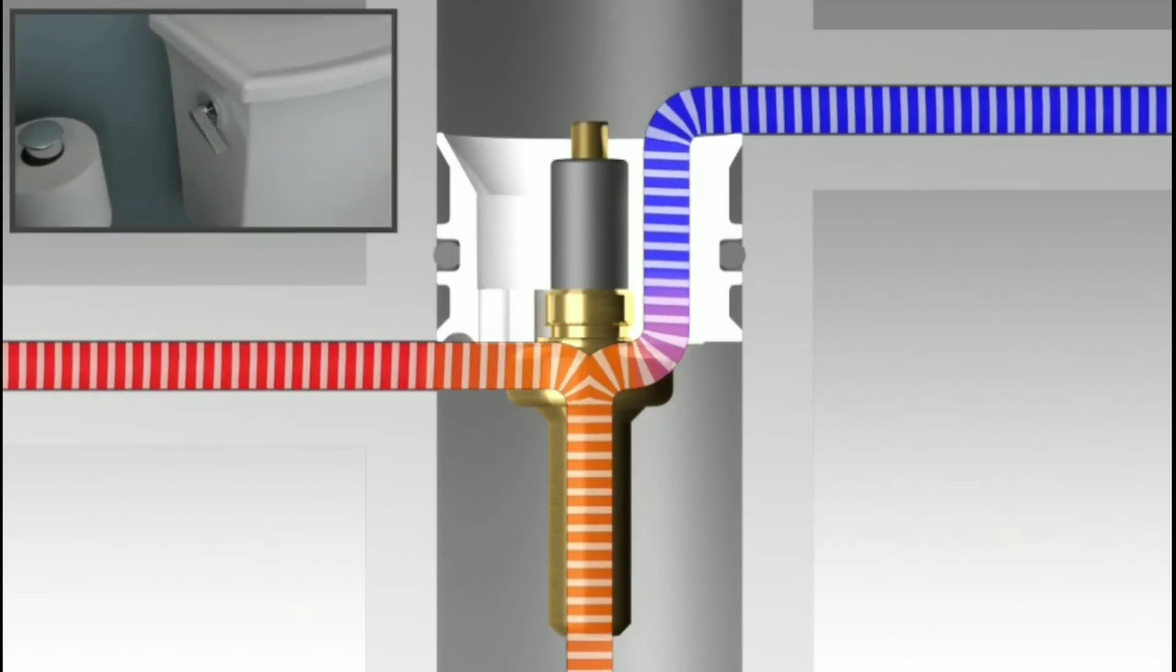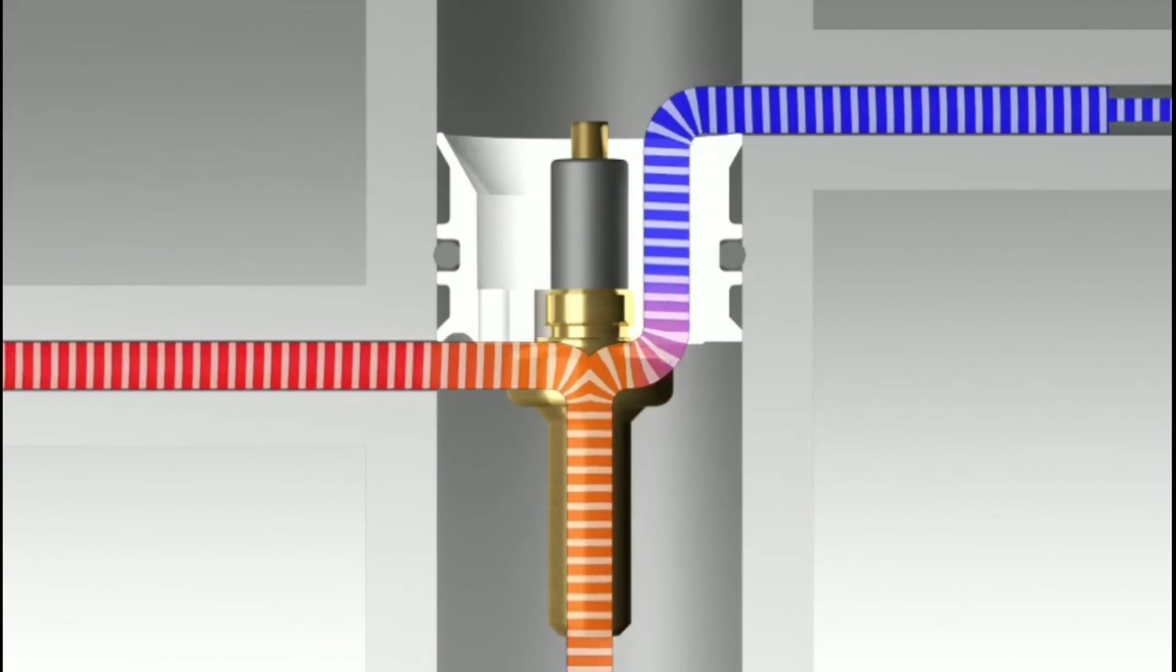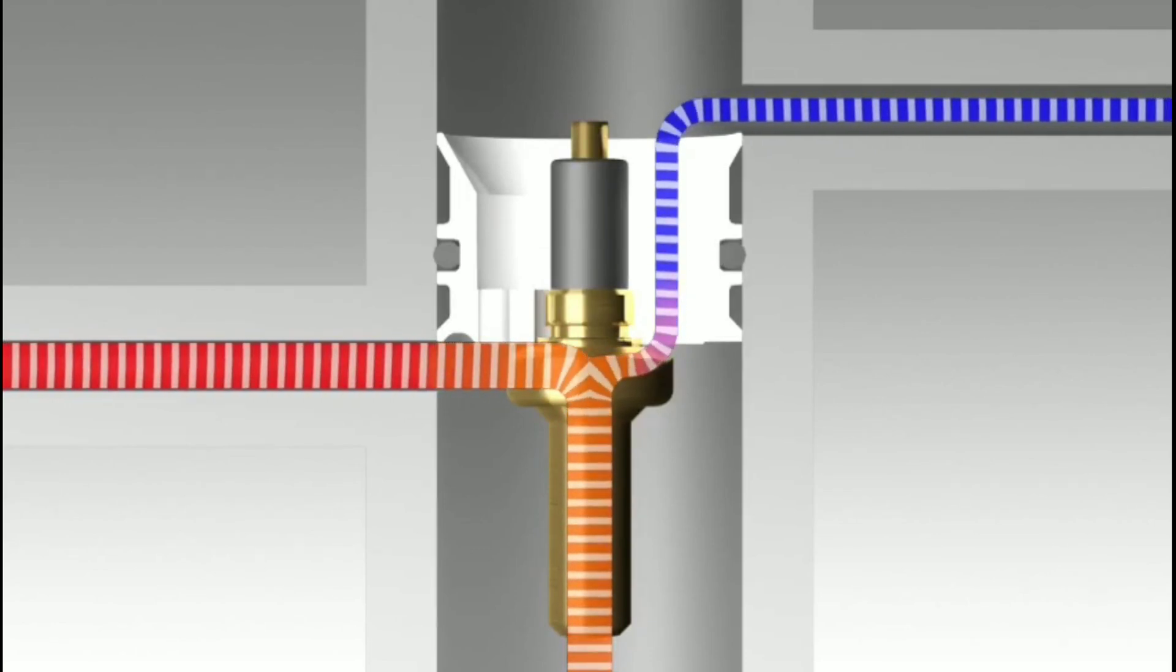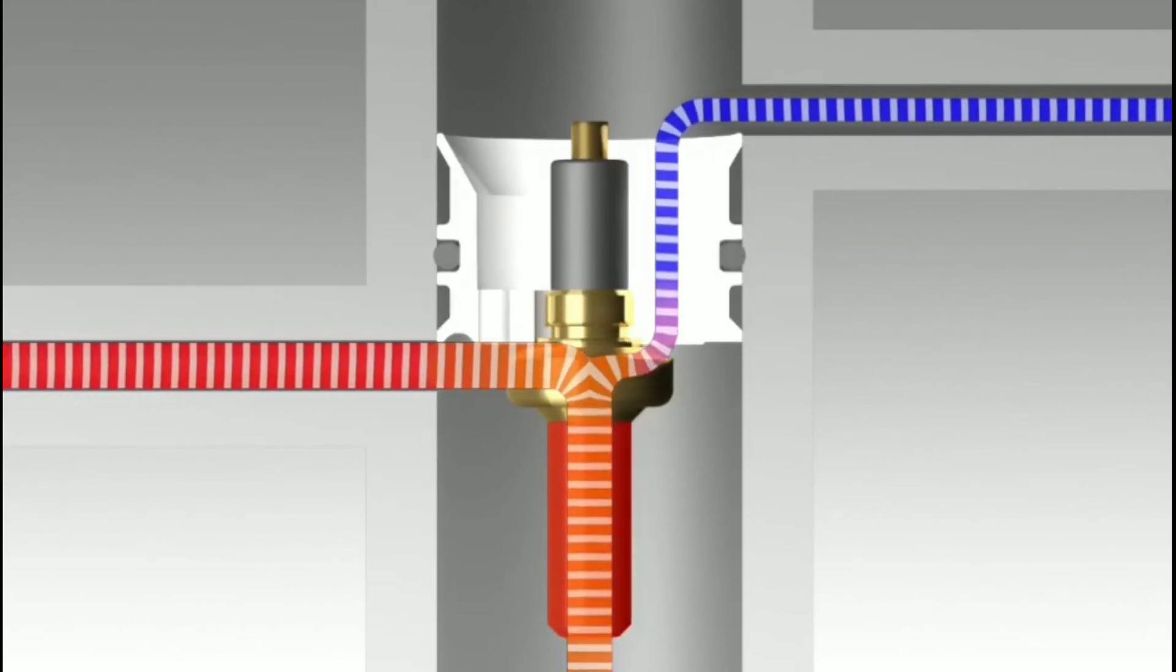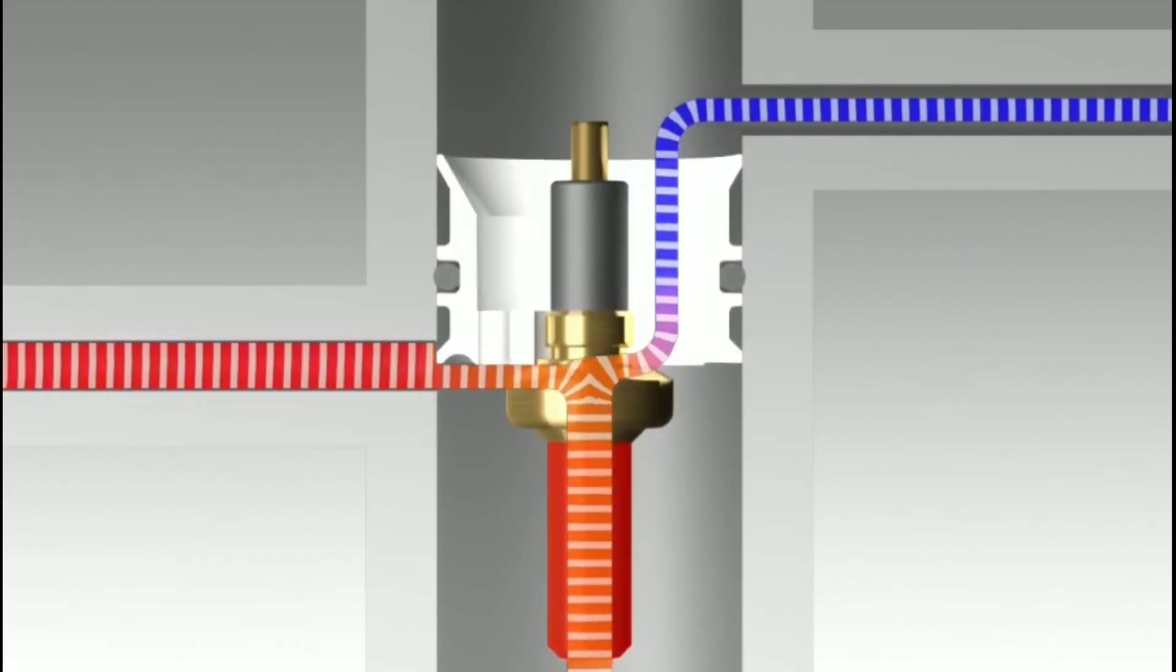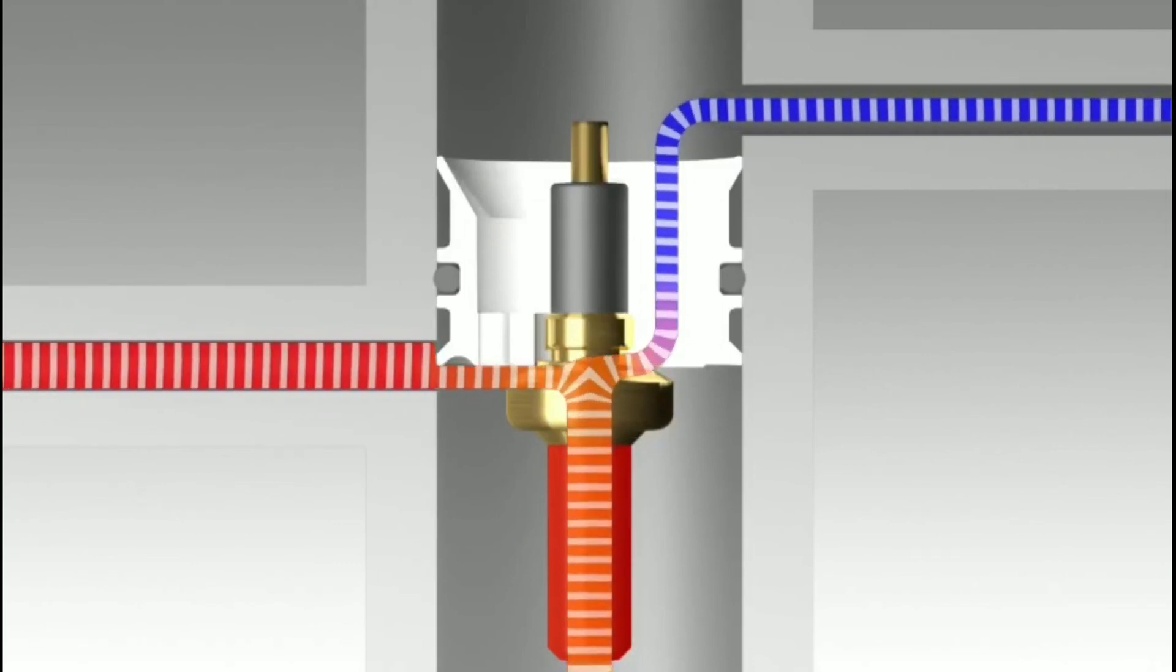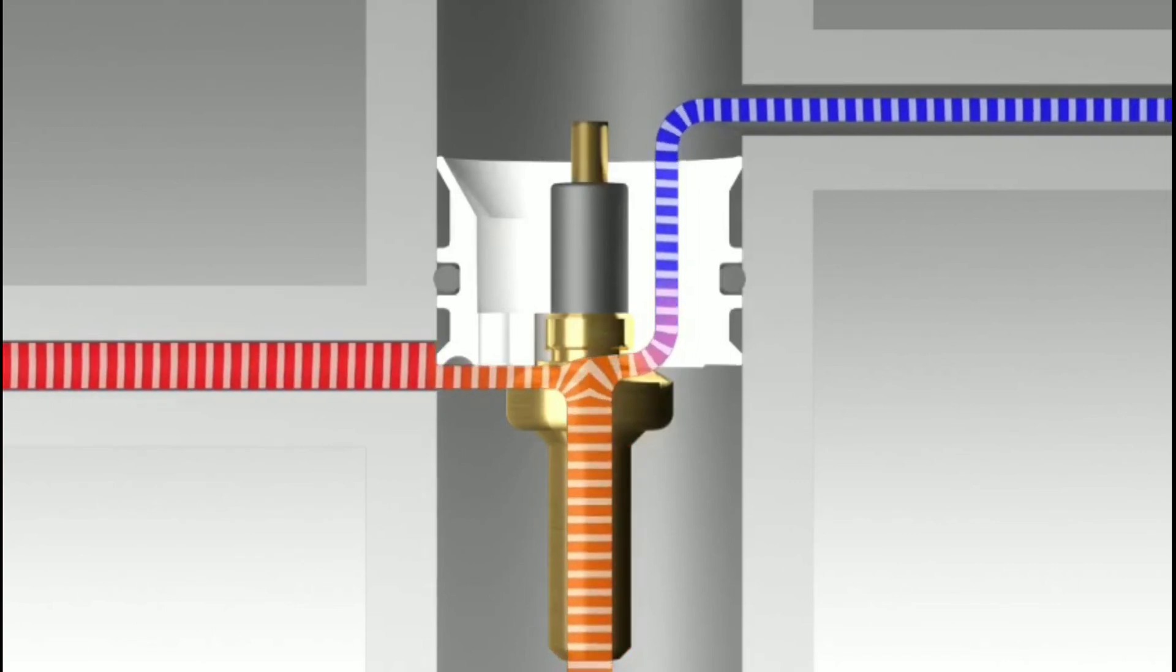For example, when a toilet is flushed, cold water will be diverted toward the toilet, resulting in less cold water flowing to the valve. With less cold water flowing into the mixing chamber, the thermostatic element will heat up and force the shuttle down. This movement quickly adjusts the proportion of hot to cold water entering the chamber, keeping the water flowing out of the valve at a consistent temperature.